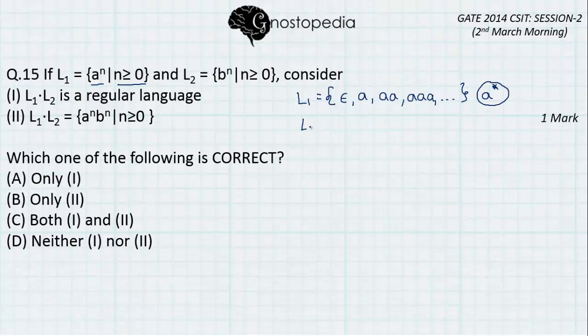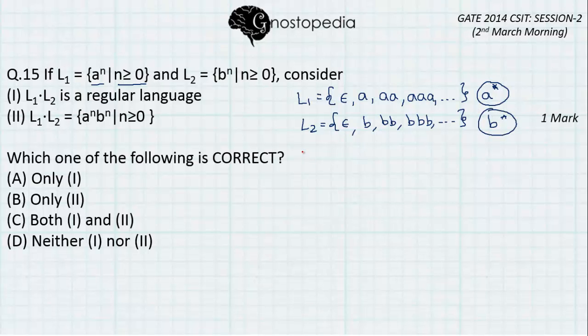Similarly, L2 will also be b, b, b, b and so on. That is nothing but b closure. Now let us find out whether L1.L2 is regular or not.